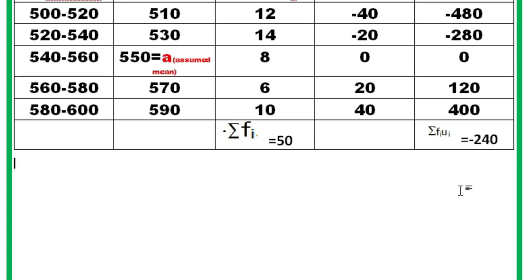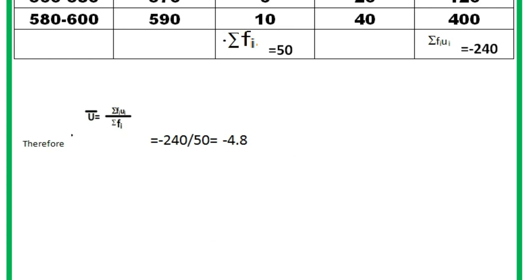Therefore, as we have done x̄, it was summation fi*xi by summation fi. Here it will be ū equals summation fi*ui by summation fi: minus 240 by 50 equals minus 4.8. Therefore, the required mean is x̄ equals a plus ū; that is the formula. So 550 plus this ū, which we already got, minus 4.8, equals 545.2.